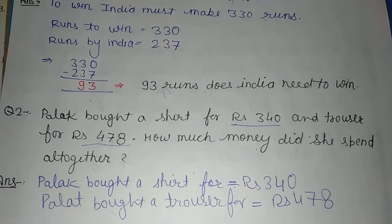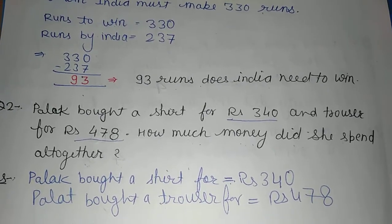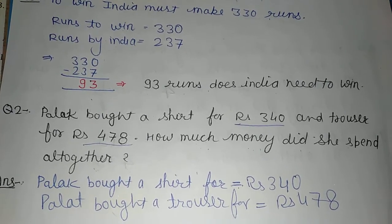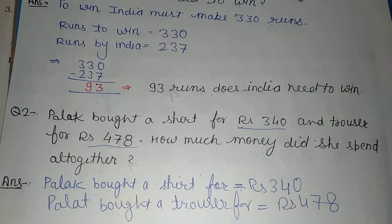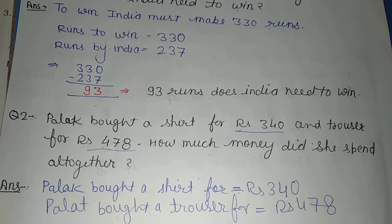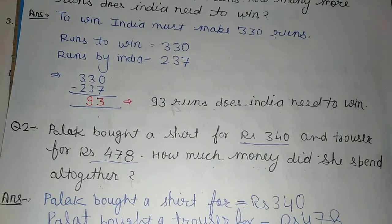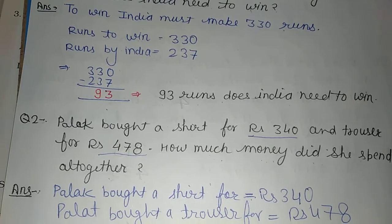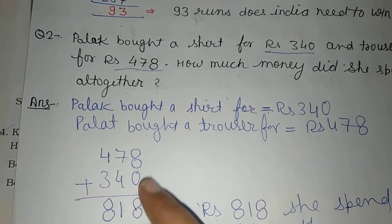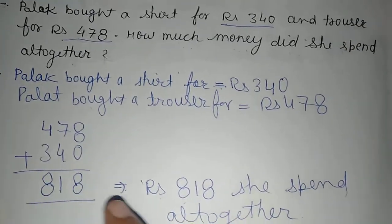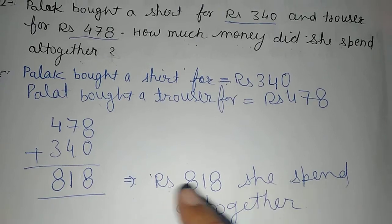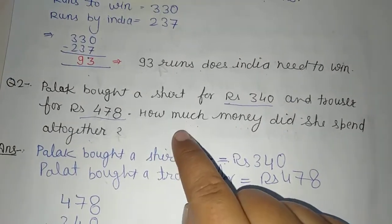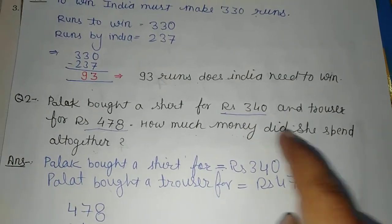After that, think whether it will be plus or minus. Close your eyes and think — you went to the market, you bought a shirt, you bought a trouser. So the total you have to pay is definitely 340 plus 478 — you have to add them. So the answer comes to 818. The answer is Rs. 818. How much did she spend altogether? Rs. 818.